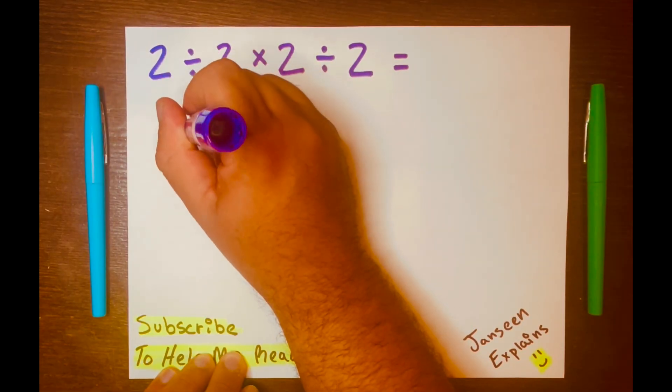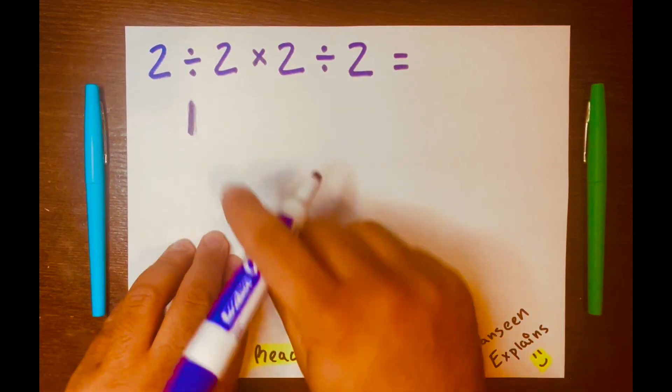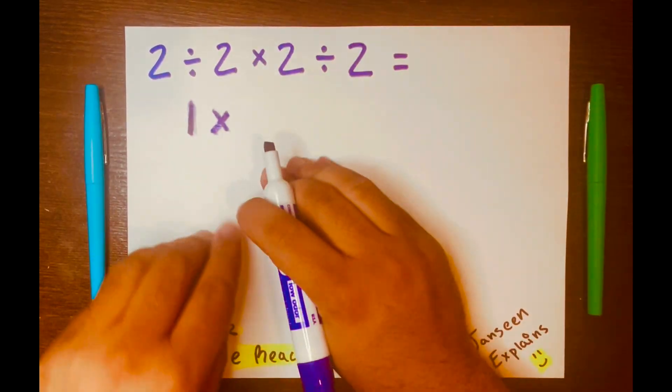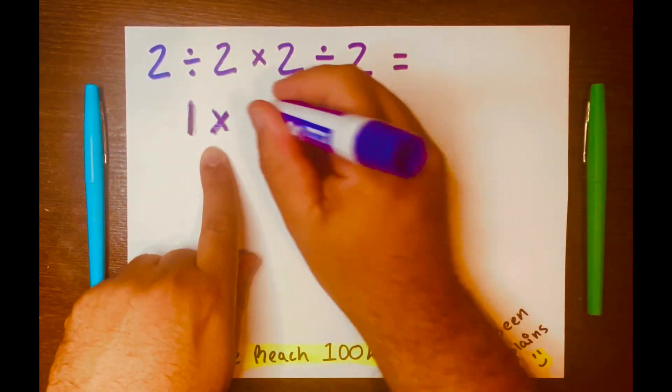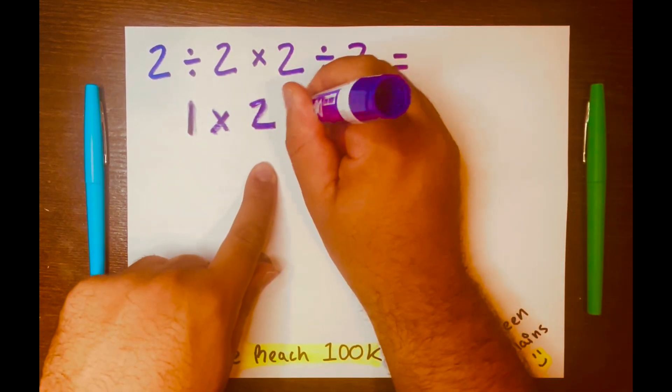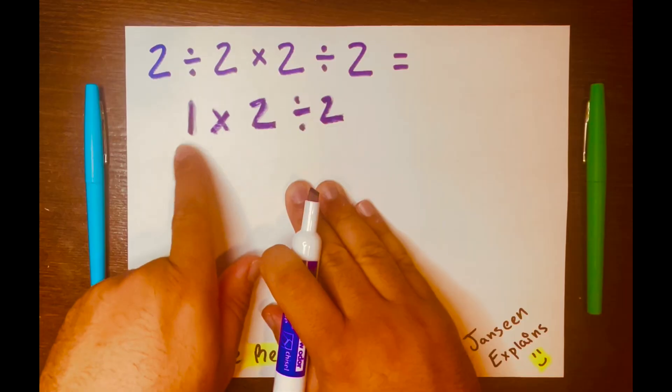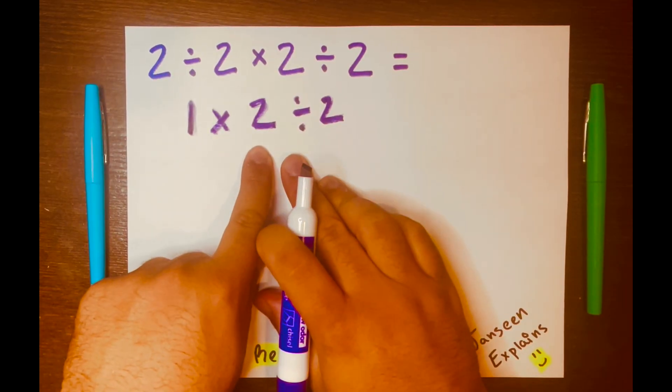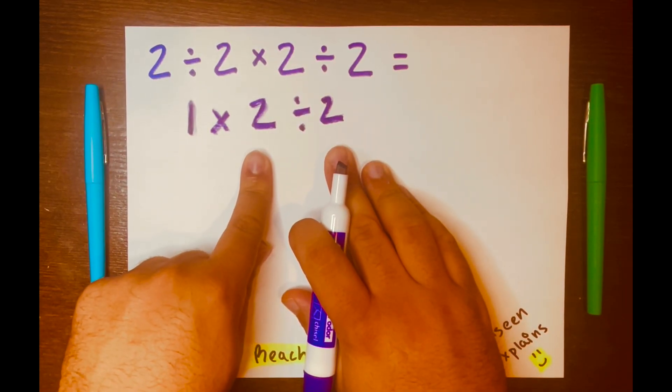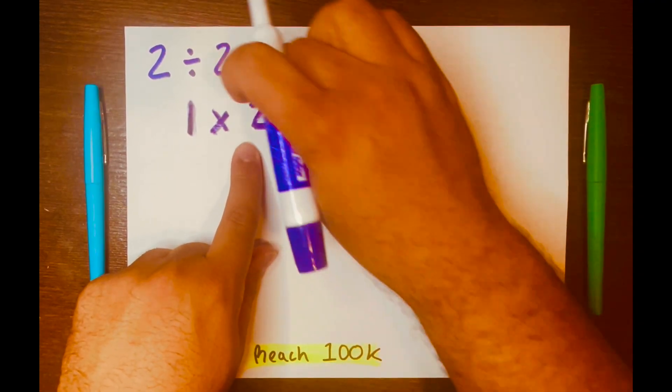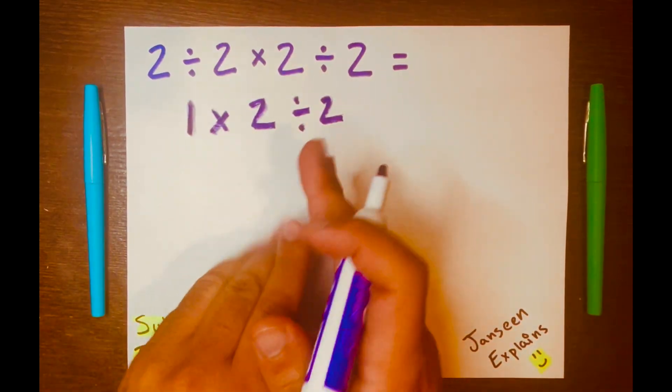And I'm running out of space here. 1 times, let's go ahead and bring down the multiplication symbol down. 2 divided by 2. Now we have 1 times 2 divided by 2. Now we need to solve, again, left to right.